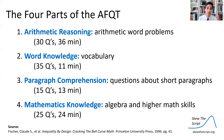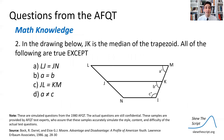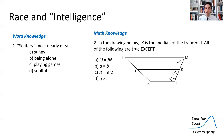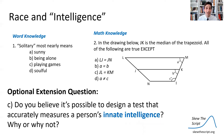Let's look at some simulated problems from a couple of these sections. Here's a simulated problem from the word knowledge section: 'Solitary most nearly means A) sunny, B) being alone, C) playing games, D) soulful.' And here's a simulated question from the math knowledge section: 'In the drawing below, JK is the median of the trapezoid. All the following are true except...' — followed by four statements to choose from. Think about these discussion questions before we come into class: Do you believe that the AFQT accurately measures intelligence? Why or why not? And building on that, what might explain the racial differences found in The Bell Curve?